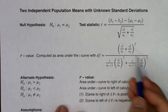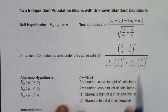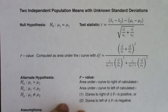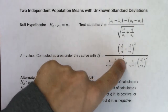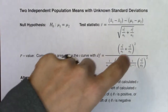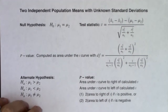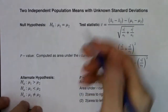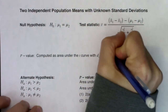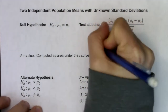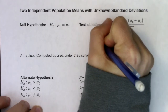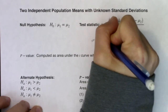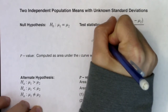On your denominator, you take each of those individual fractions, square them, divide by n-sub-1 minus 1 and n-sub-2 minus 1 respectively, then add them. If you have nothing better to do on a Friday night, crunch this — it's a good time. What we're going to use instead is technology: the TI-83 or 84 to get this number.